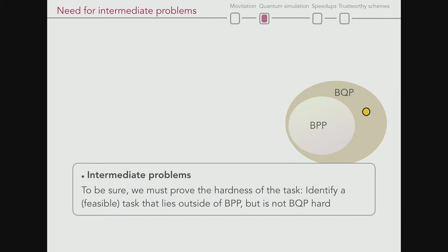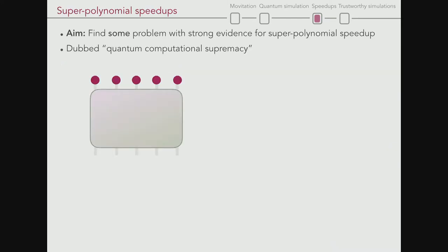To be safe, you want an argument based on computational complexity, the same way we say quantum computers are more powerful - meaning they can solve BQP problems outside BPP. We want to prove the hardness of the task and identify a feasible task outside of BPP - not BQP-hard because these aren't quantum computers. Find a feasible scheme realizable in the lab that does something hard and interesting, not accessible otherwise.